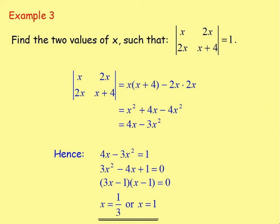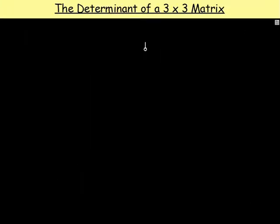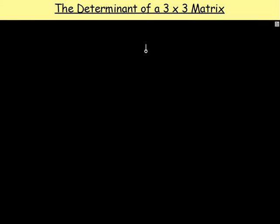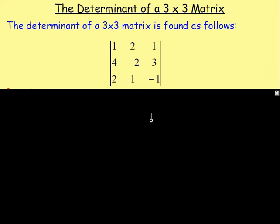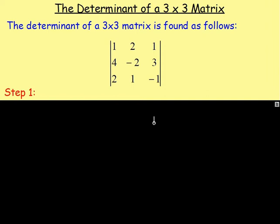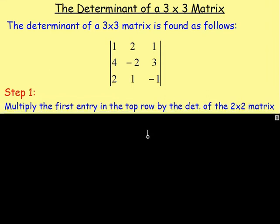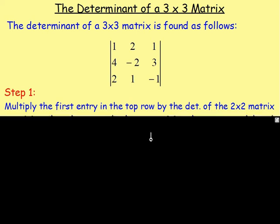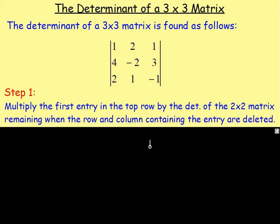Let's move on now to work out the determinant of a 3x3 matrix. The first thing you want to do is multiply the first entry in the top row by the determinant of the 2x2 matrix remaining when the row and column containing that entry are deleted.